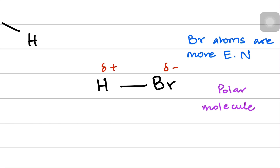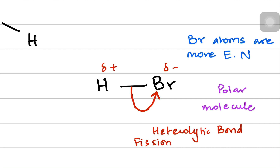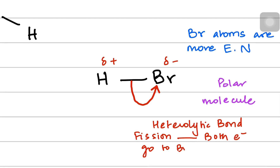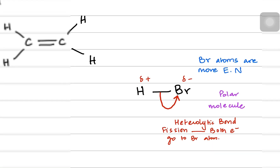What happens is that bromine tries to break the hydrogen-bromine bond in a heterolytic manner. Heterolytic fission is where unequal division of the electron pair occurs. The hydrogen-bromine bond breaks so that both electrons go to the bromine atom.